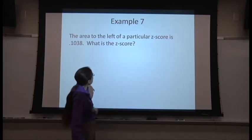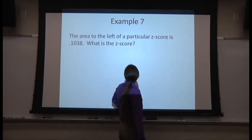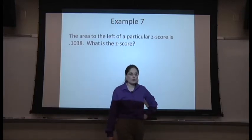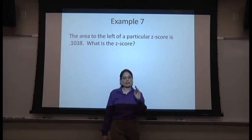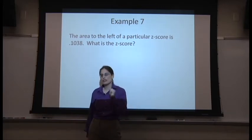The area to the left of a particular z-score is 0.1038. What is the z-score? So I gave you a table value and I'm asking you for the z-value.